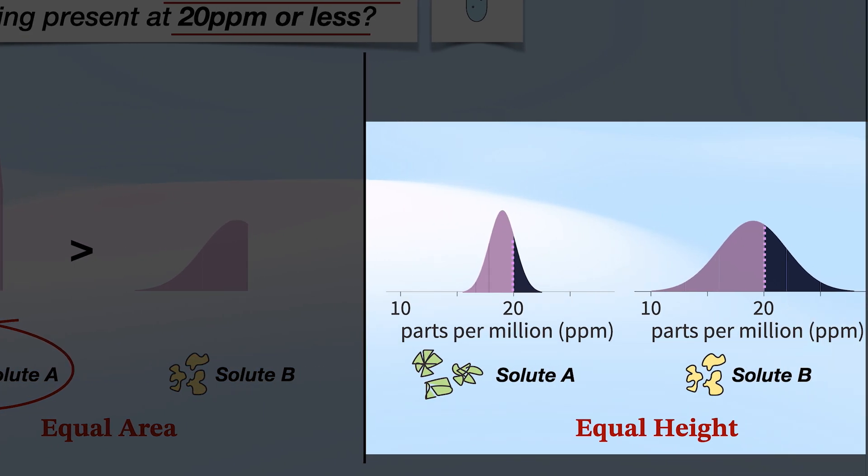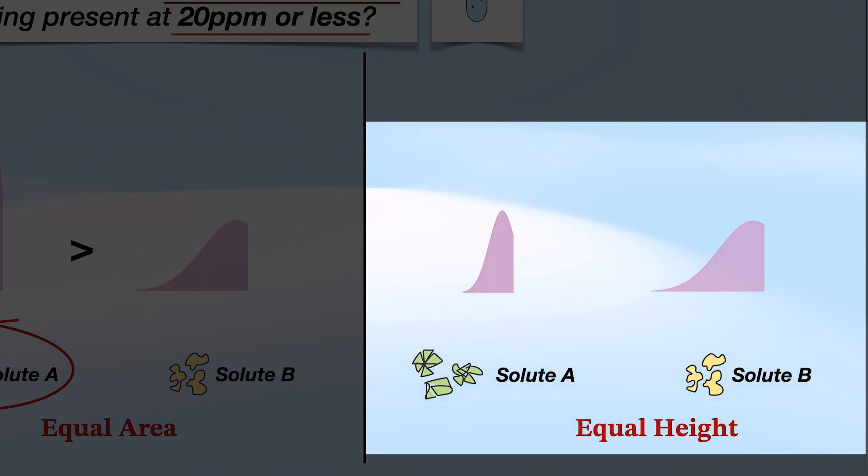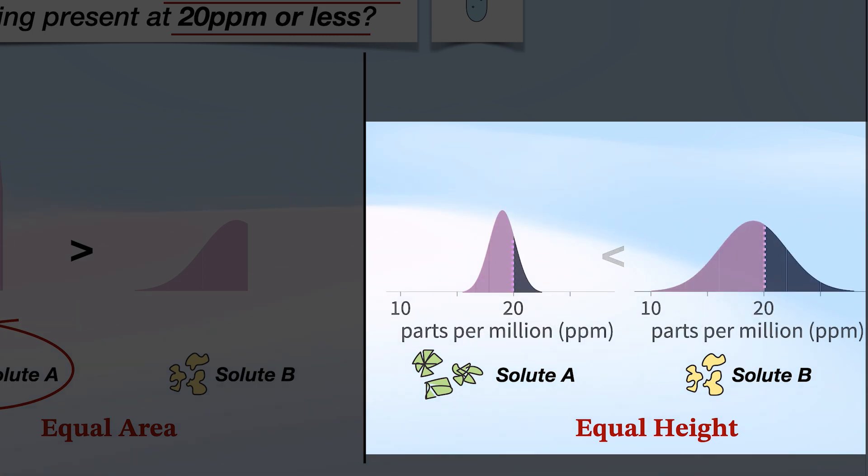Now, if we wanted to go and do this with the equal height PDFs and we tried to compare just the partial areas of solute A and solute B, we would find that solute B takes up a larger amount of area. But we can't do that because remember, we scaled down solute A.